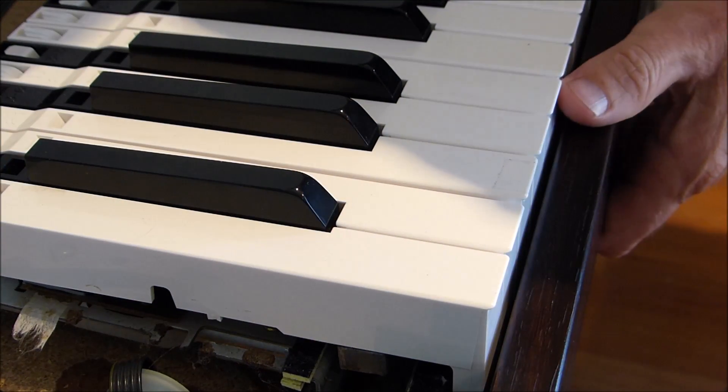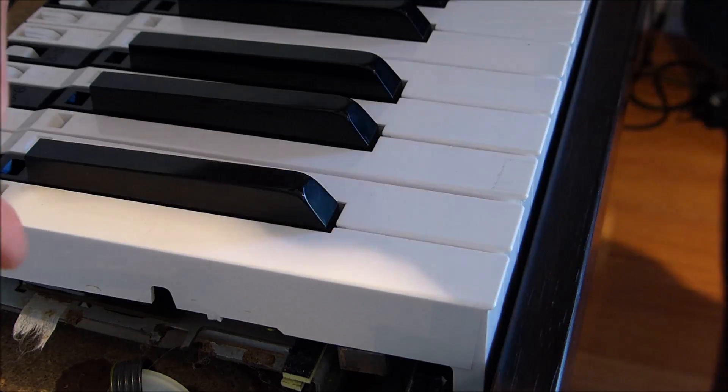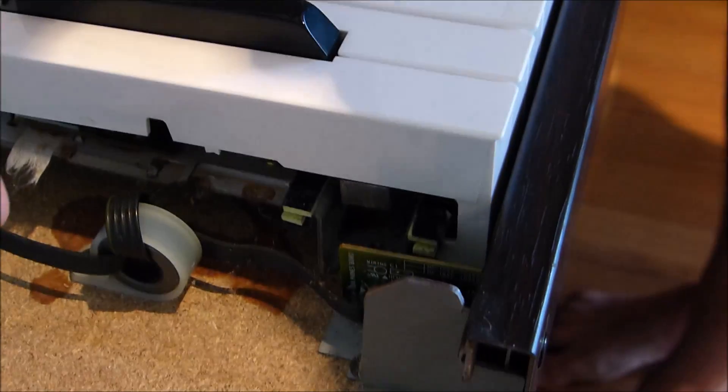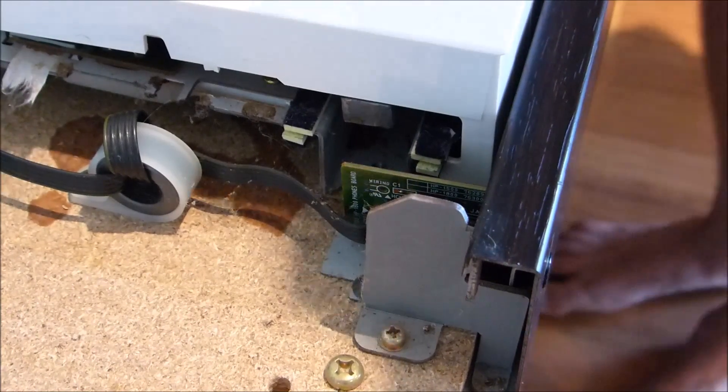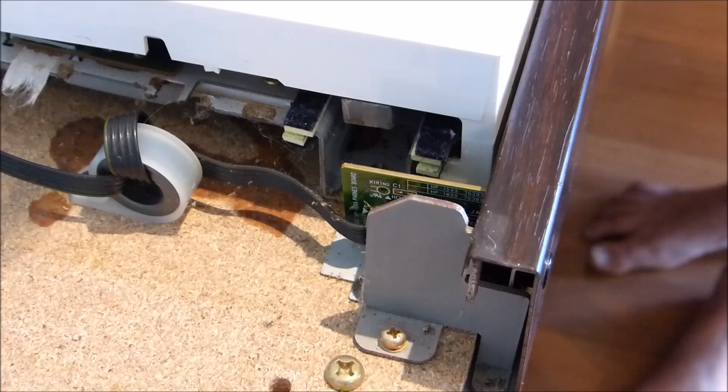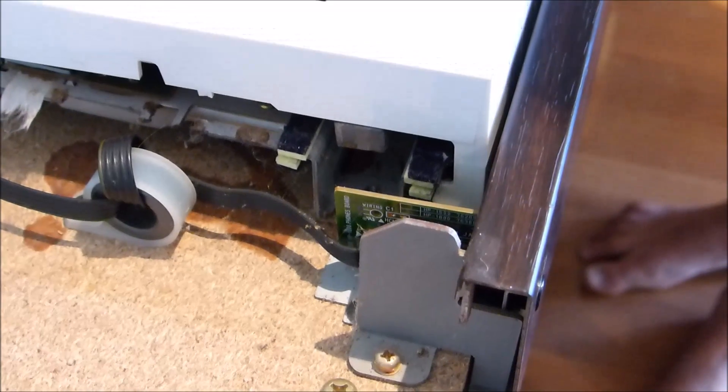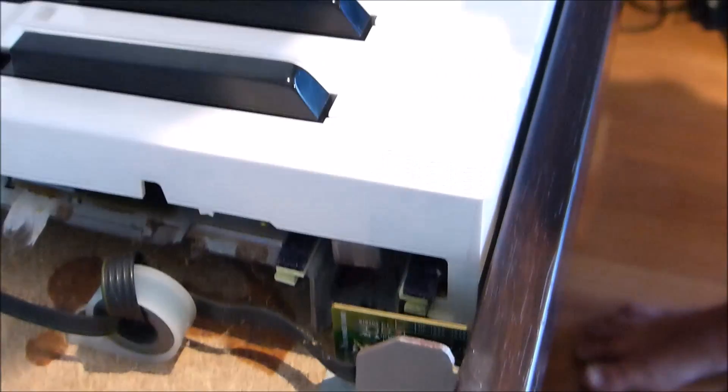I think there's four screws to remove before you can get that off. There's one here and there's one underneath here. Sorry, there's actually a row of screws underneath the piano as well. Anyway, that's not the main point of this tutorial.